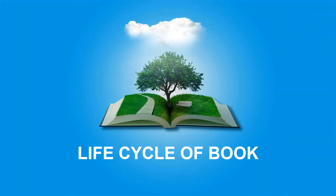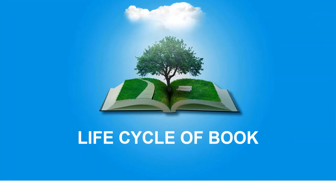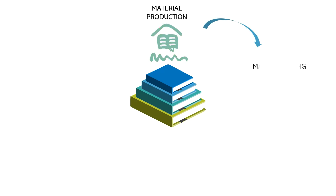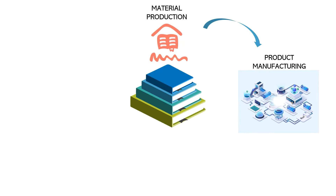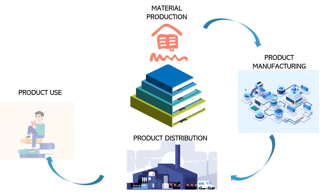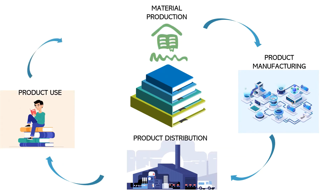Life cycle of book: the life cycle of a book has five stages. First, material production. Second, product manufacturing. Third, product distribution. Fourth, product use. And fifth, end-of-life product.